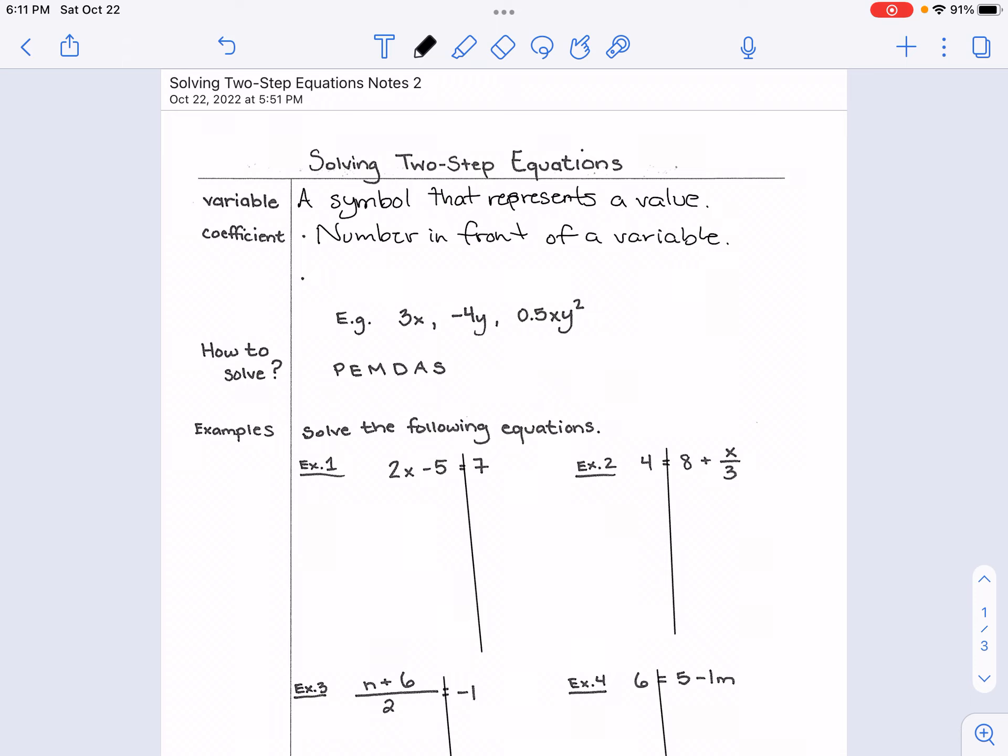Its meaning is it says the quantity of variables, so how many are there. An example here is in 3x, I'm going to highlight this, it's just 3. This tells me that there are three x's. If you don't have a highlighter you can just circle it. In negative 4y it's negative 4, and 0.5xy squared, this is just 5 tenths or 0.5. Those are the coefficients.